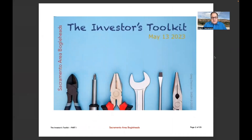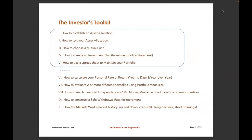This could be approached in several different ways, and the way we're going to approach it today is basically a sampling of each of these documents, tools, and Excel spreadsheets. Let's go over the agenda quickly. The first item is how to establish an asset allocation, how to test that asset allocation — I have several documents and spreadsheets to go along with each of these — how to choose a mutual fund, and how to create an investment plan, sometimes called an investment policy statement. I also have material on how to use a spreadsheet to maintain your portfolio.